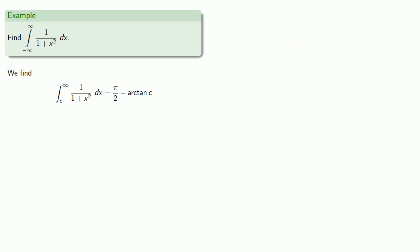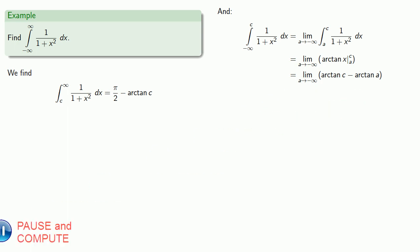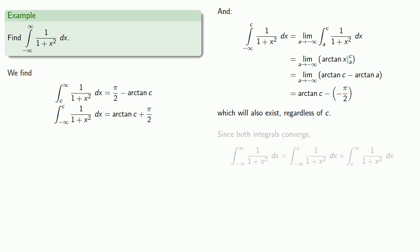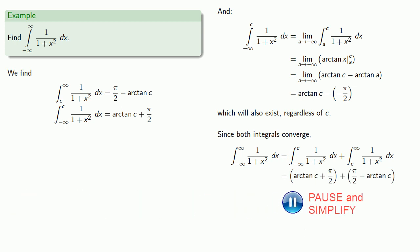Similarly, we can find the integral from minus infinity up to c. First, we'll express it as a limit. Evaluate the integral. Then take the limit. And again, this limit will exist regardless of the value of c. And since both integrals converge, then our integral from minus infinity to infinity is going to be the sum of these two.